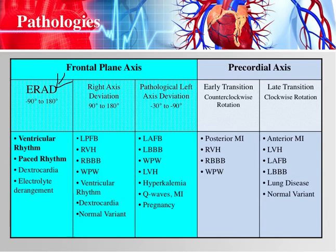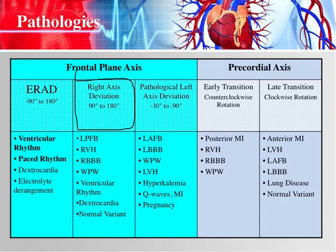ERAD — extreme right axis deviation — is sometimes called no man's land because that is the worst type of axis deviation to have. There are only a few things that can cause that. If your leads are on appropriately, a ventricular arrhythmia and a paced rhythm would be the most common causes. Also very uncommon: dextrocardia, which is when your heart is transpositioned, and electrolyte derangement. Right axis deviation runs from 90 to 180 degrees, and causes include left posterior fascicular block, right ventricular hypertrophy, right bundle branch block, Wolf-Parkinson-White syndrome, ventricular arrhythmias, dextrocardia, and sometimes it's just a normal variant.